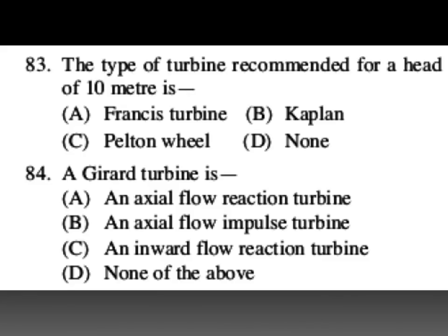The type of turbine recommended for a head of 10 meters — 10 meters means low head — your Kaplan turbine is for low head. Head less than 60 meters: choose Kaplan turbine. Head between 60 and 200 meters: mixed flow Francis turbine. Head greater than 300 meters: Pelton wheel.